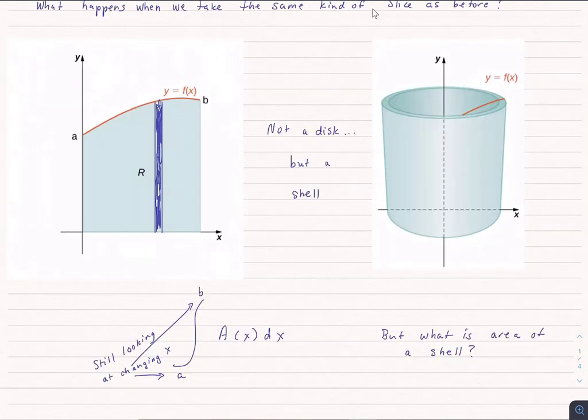Last time what we did was we went from a to b of the area of the shape dx. Even though this is being rotated around the y-axis, we've got to think about this a little differently this time. With the shell method, if it's rotated around the y, you still integrate in terms of dx. It's the opposite.